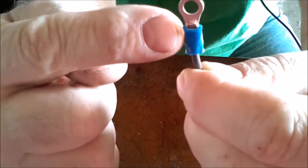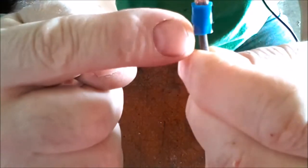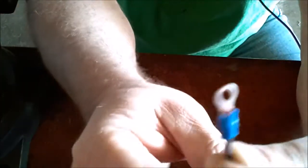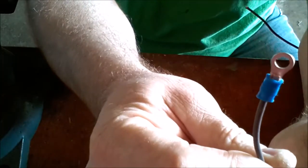And then you can also see this particular type of crimp tool, it crimps one crimp on the metal part and crimps the wire, and the other part crimps on the insulation of the wire. So that's how I do all my crimping.